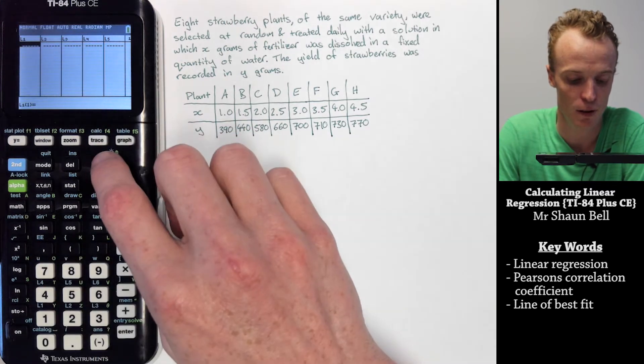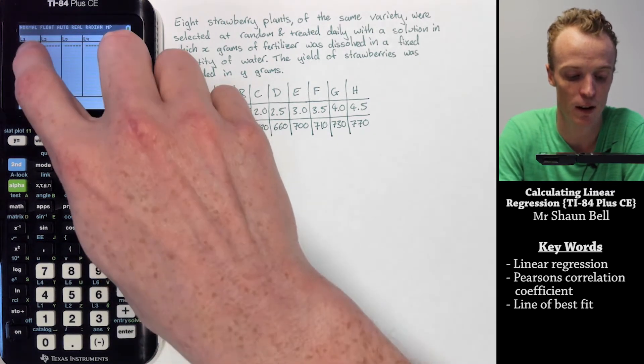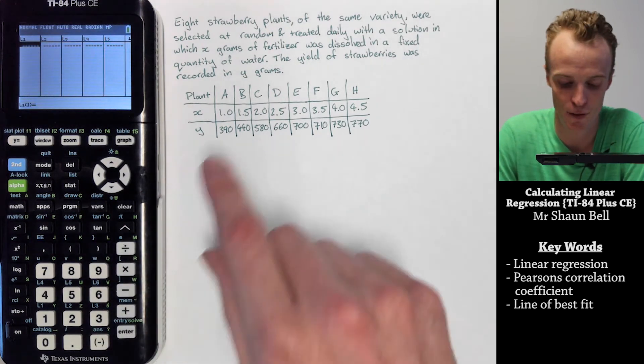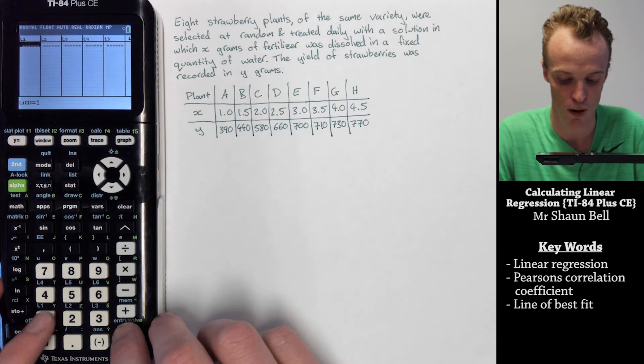Once you've done that, use your direction keys to have it highlighted in the double dots or underlining dots, and enter the values of your x's. We'll start with 1.